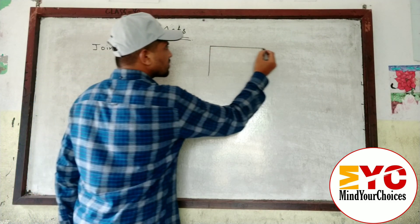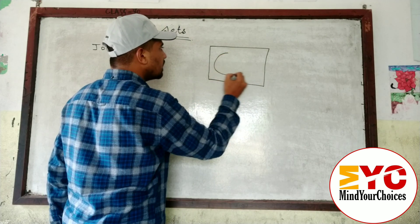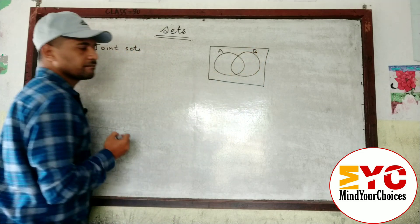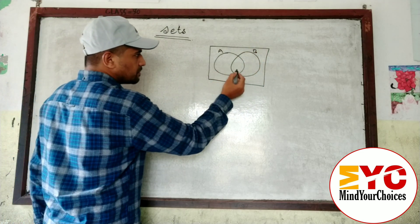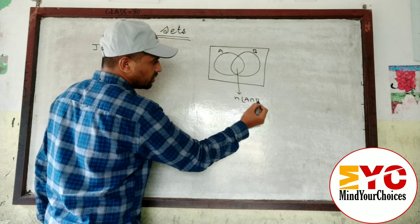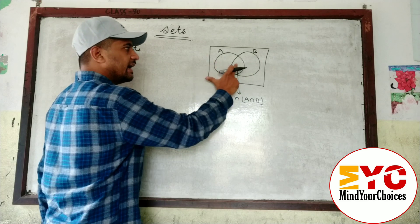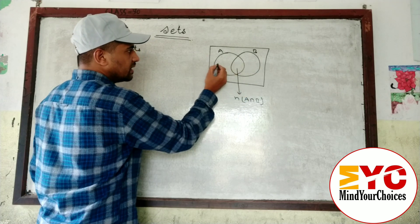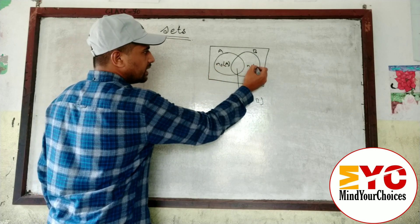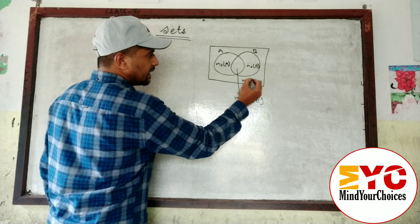Now look at joint sets. Joint set means there are elements common between A and B. I will give you an example after the formula. This middle part is known as n(A∩B) — the common elements of A and B, because this part belongs to A and also to B. This part is known as n(only A) and this part is known as n(only B).